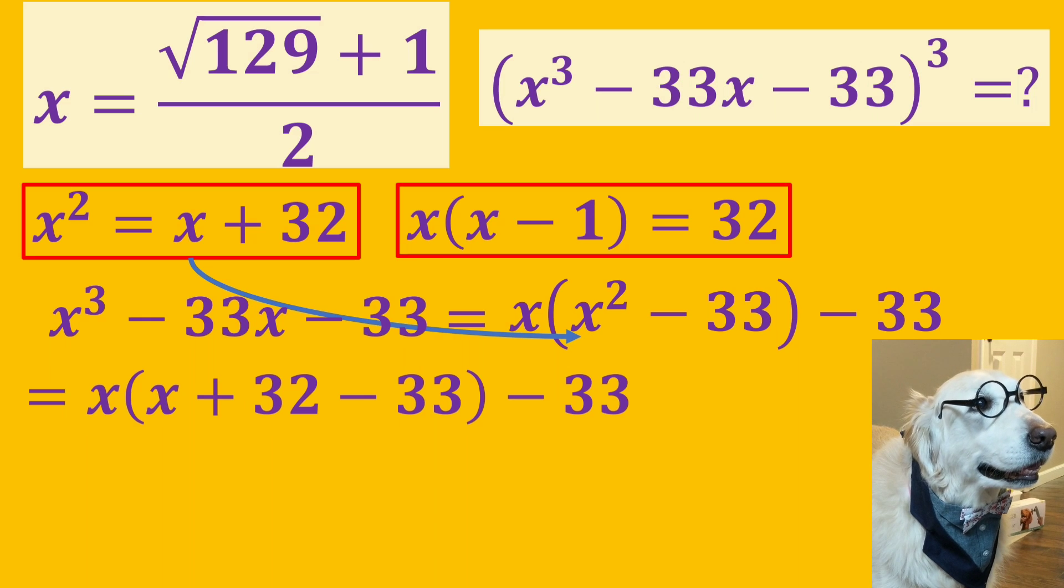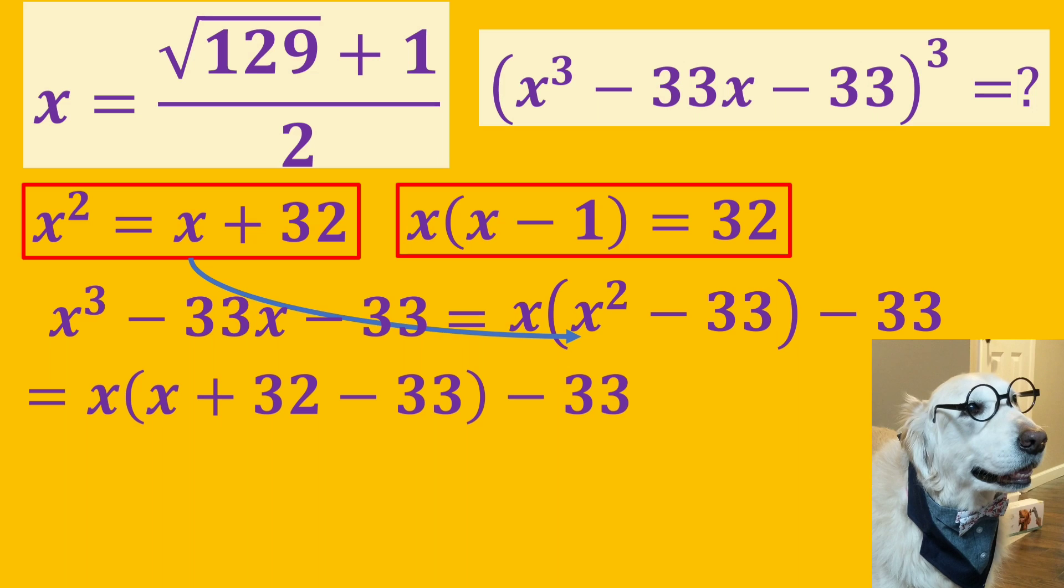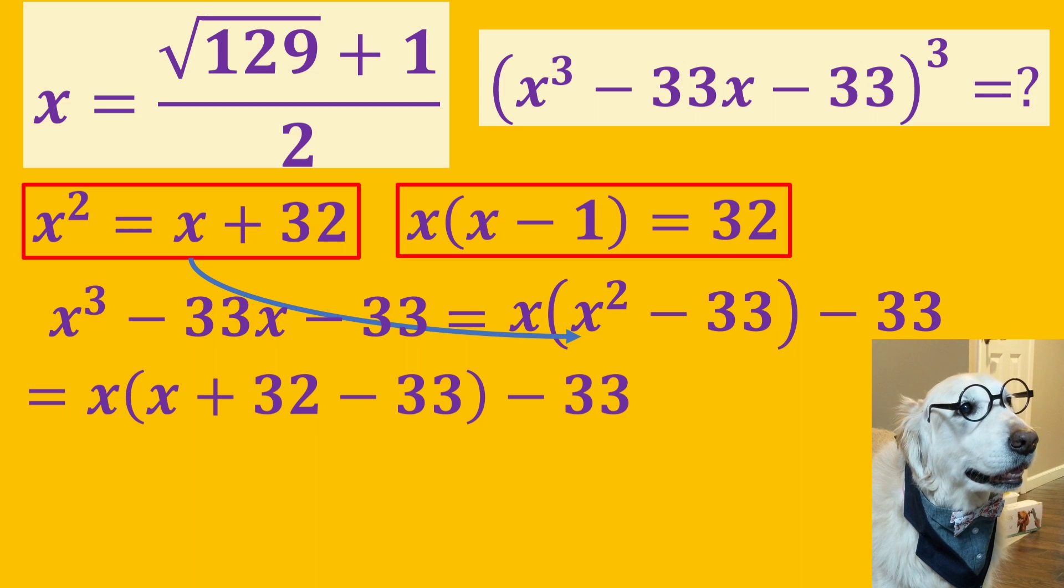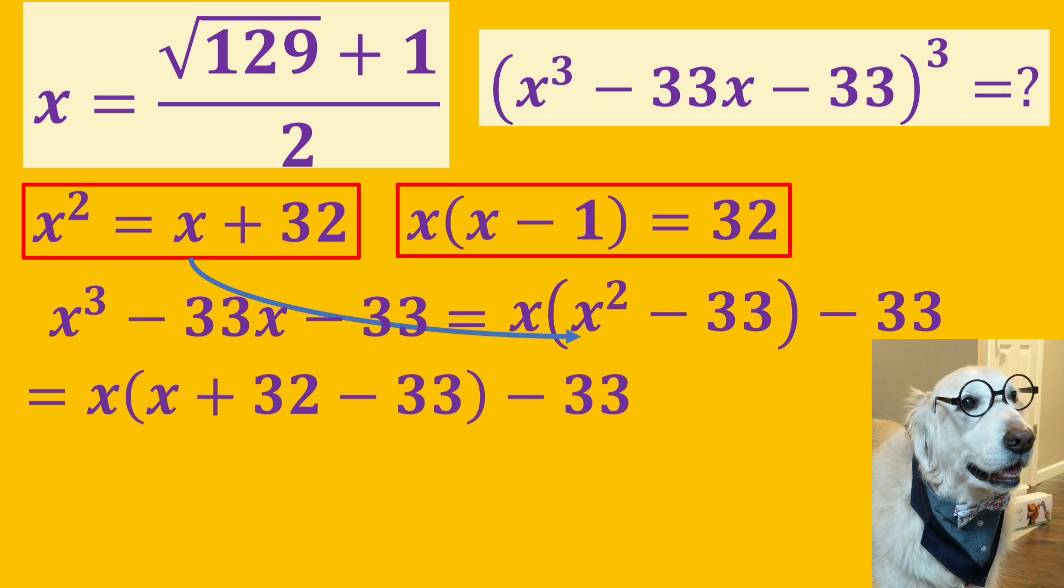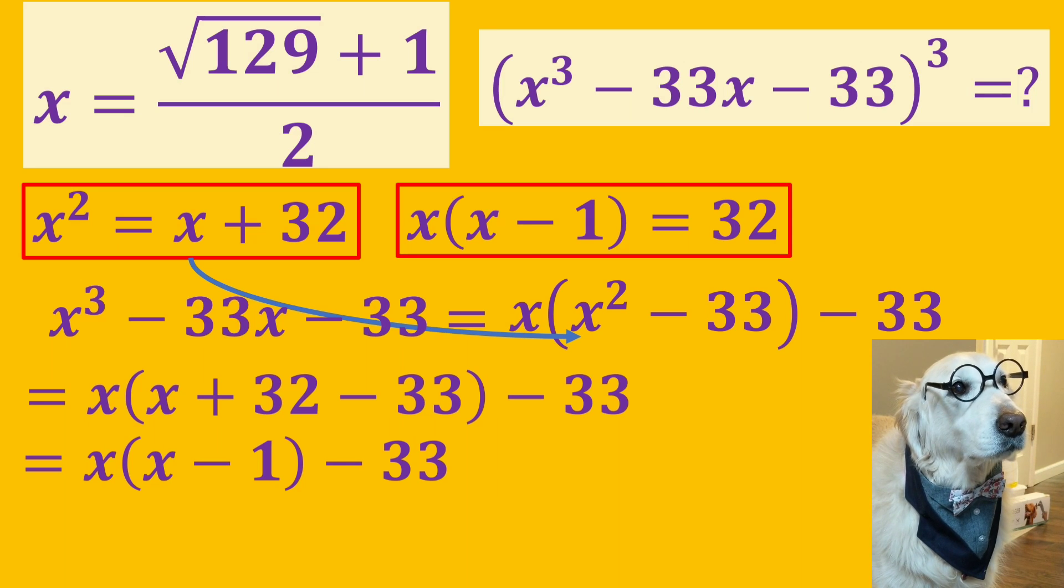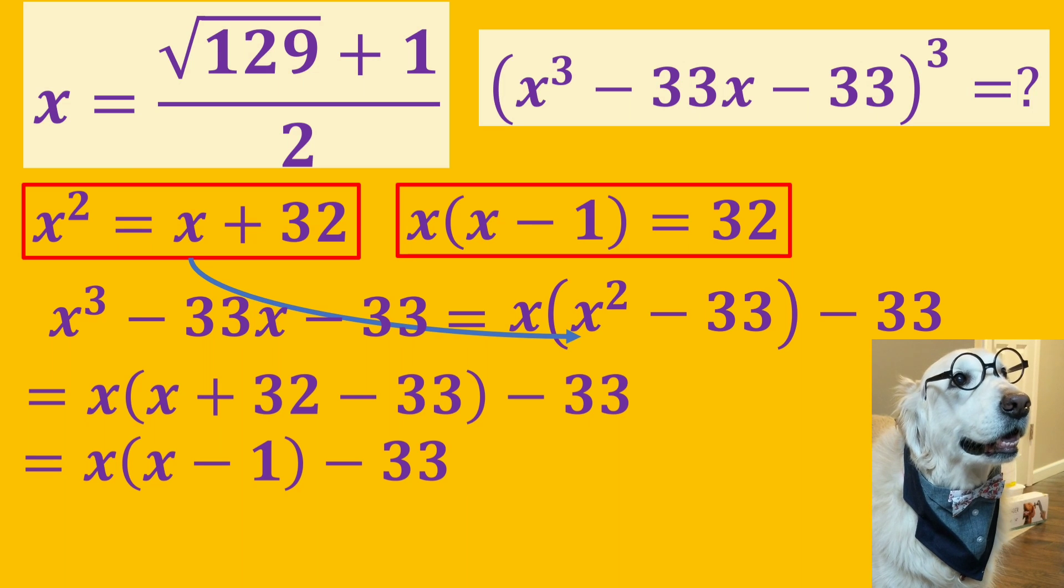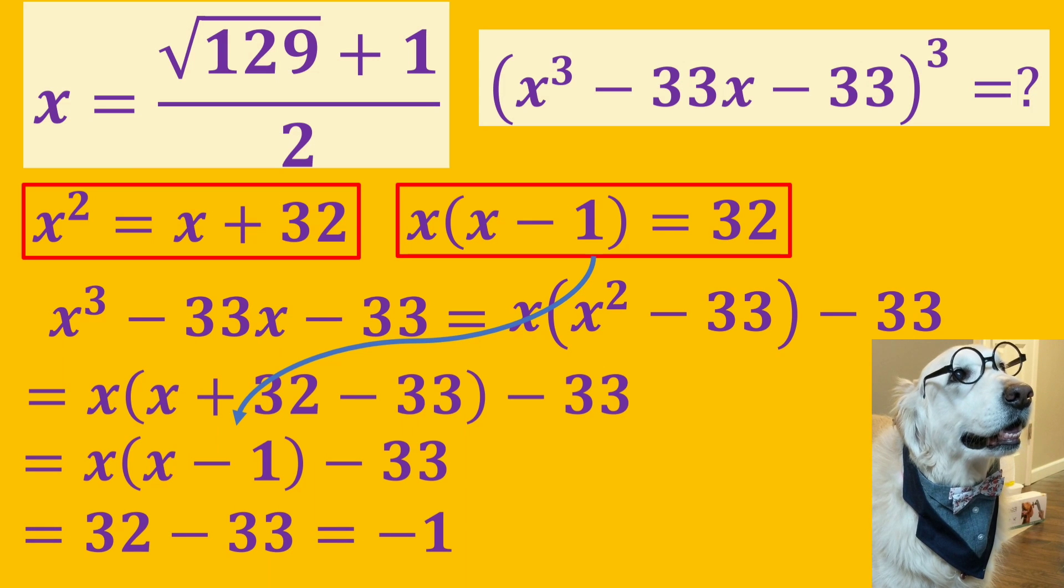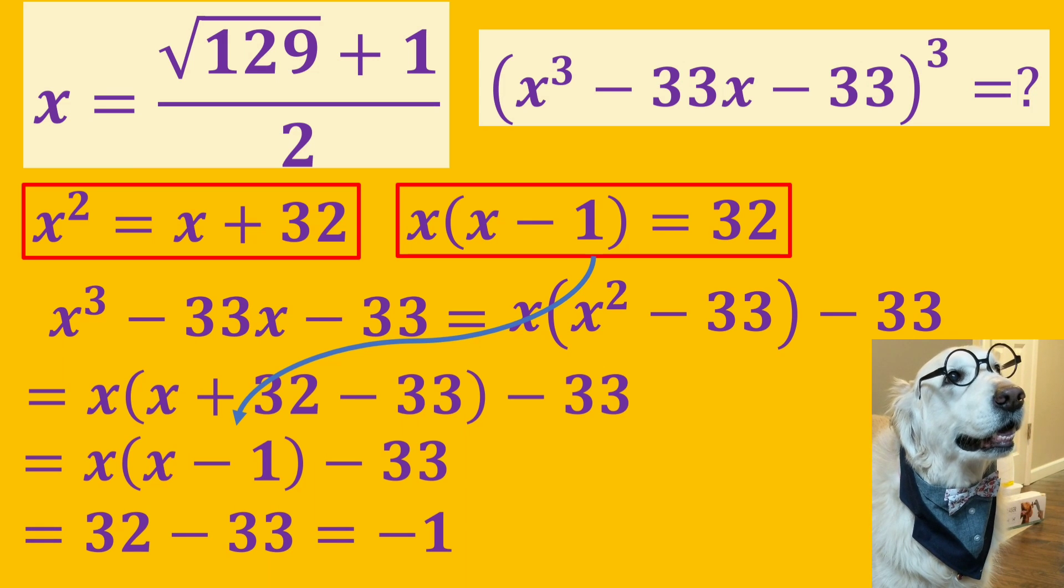We know that x squared is equal to x plus 32. So, we substitute x squared with x plus 32.